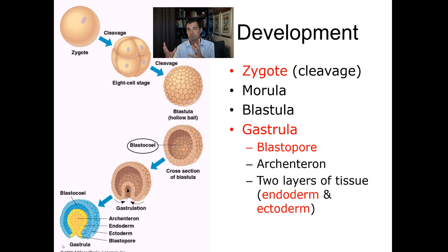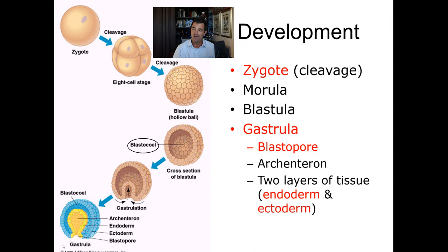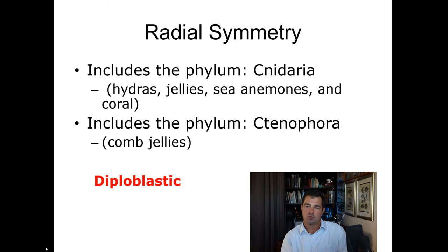You don't need to worry about the names of those parts, but eventually you end up with this big ball of cells. It's like a balloon. If you took your thumbs and pushed them into the balloon, you would have what they call a gastrula.